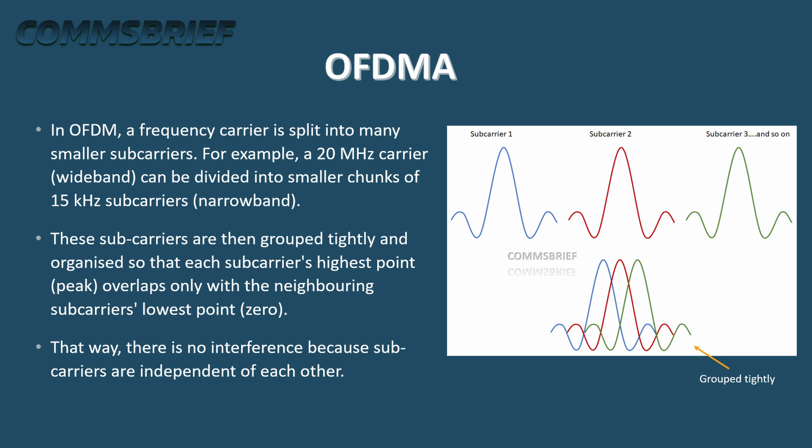These sub-carriers are grouped tightly and organized so that each sub-carrier's highest point or peak overlaps only with the neighboring sub-carrier's lowest point, or zero. That way there is no interference, because sub-carriers are independent of each other. The word 'orthogonal' here means independent.